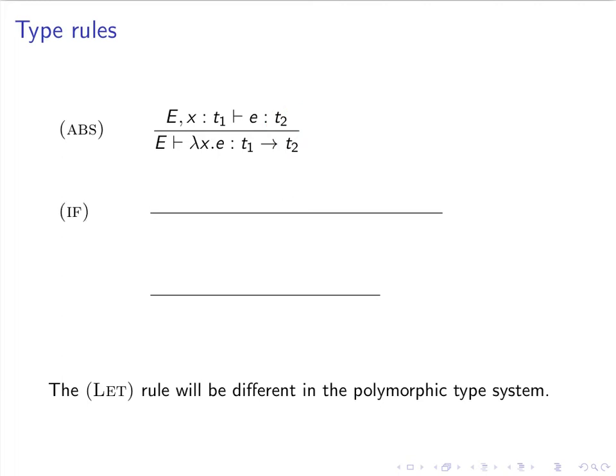Now, how do we type an if expression? A conditional expression if E0 then E1 else E2 has type T if, firstly, the condition E0 has type boolean, and then subsequently we check that E1 and E2 are both typeable with the same type T. If both branches of the if expression have the same type, then that's the type of the if expression.